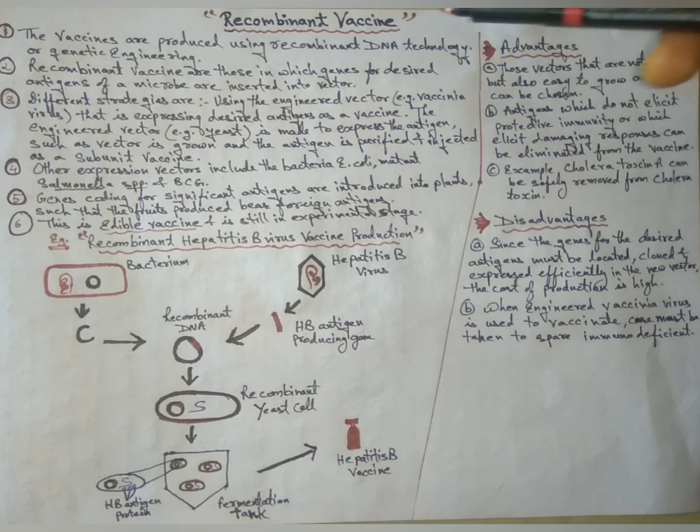So, this is recombinant vaccines. What is recombinant vaccines? How it is produced? What are the advantages and disadvantages? Thank you.